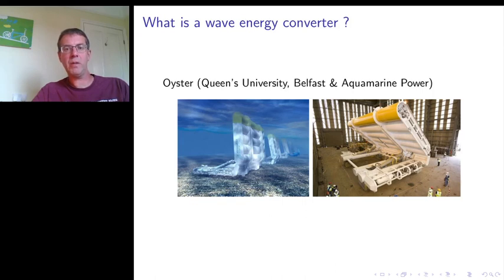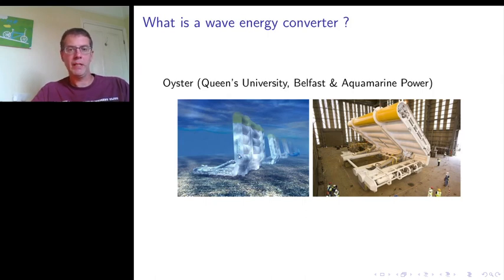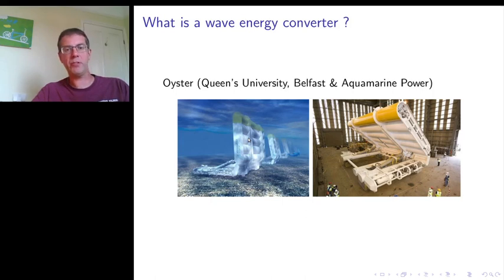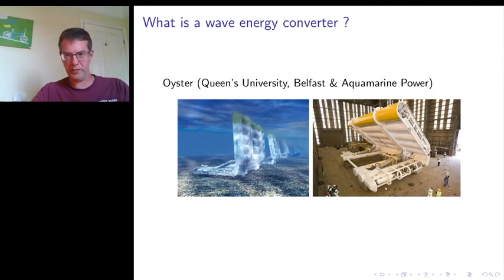These two examples have come very close to being made into fully commercial operations — full-scale prototypes were developed in each case. The first is the Oyster, or Oyster flap wave energy converter, developed at Queen's University in Belfast and then spun out into a company called Aquamarine Power. On the left you can see a cartoon of an array of these devices sitting in shallow water — designed to sit in about 12 meters depth, about 500 meters to a kilometer from the shoreline.